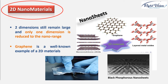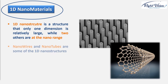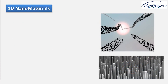A one-dimensional nanostructure is a structure where only one dimension is relatively large while the other two are at the nano-range. Nanowires and nanotubes are examples of one-dimensional nanostructures. Due to the size and limited number of atoms of a nanomaterial, quantum confinement happens, and electrons cannot move freely as they do in bulk material.